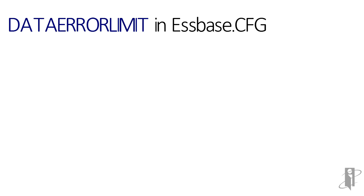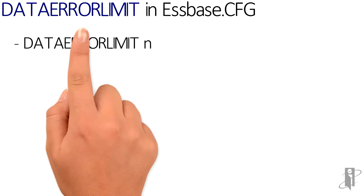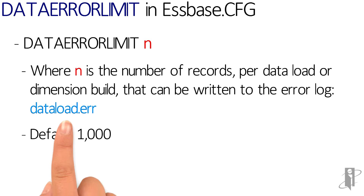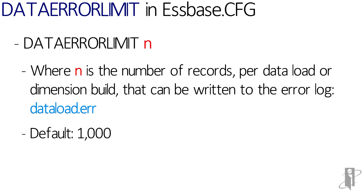Here we have the syntax for the Data Error Limit, where N is the number of records per data load or dimension build that can be written to the error log, which normally you can find on your desktop. The default setting is at 1,000 and the maximum for the setting is at 65,000.